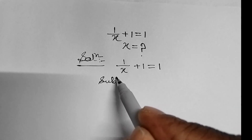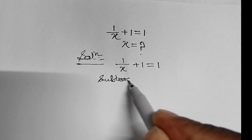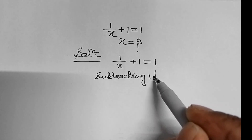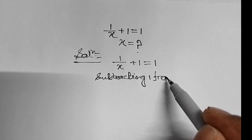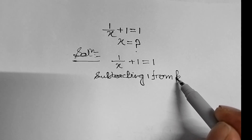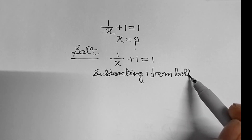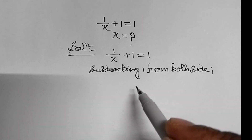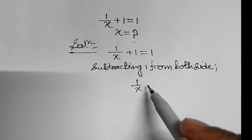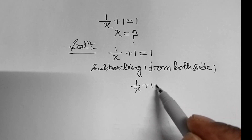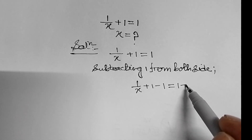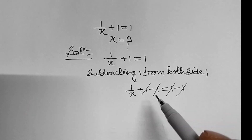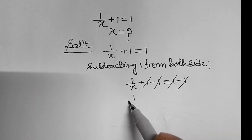Therefore, subtracting 1 from both sides, we get 1 upon x plus 1 minus 1 equal to 1 minus 1. Plus 1 minus 1 will be cancelled on both sides. Therefore, 1 upon x equal to 0.